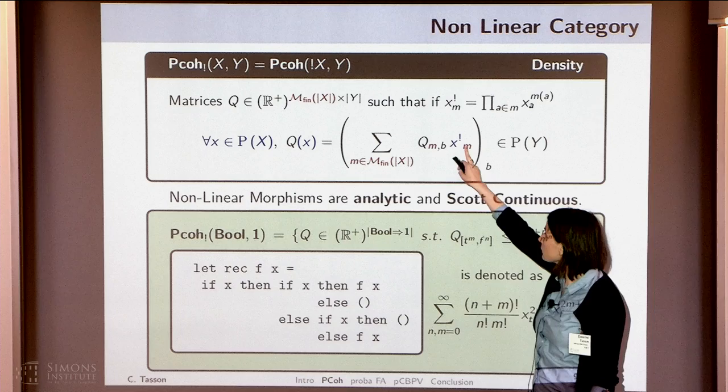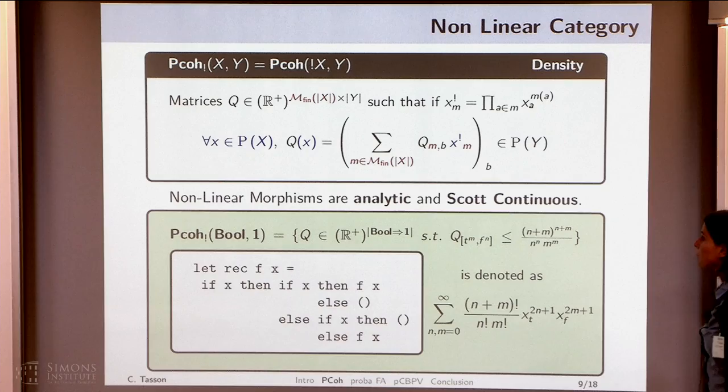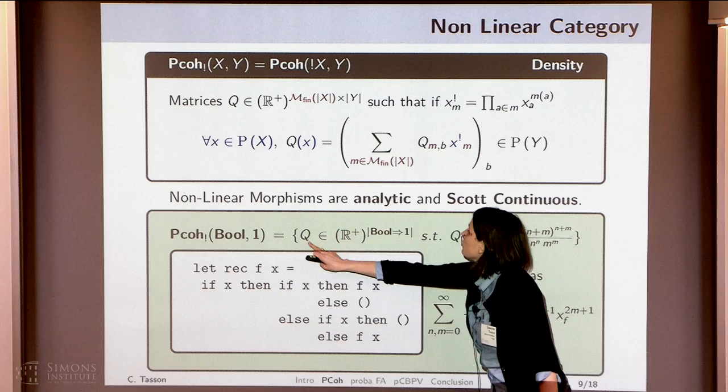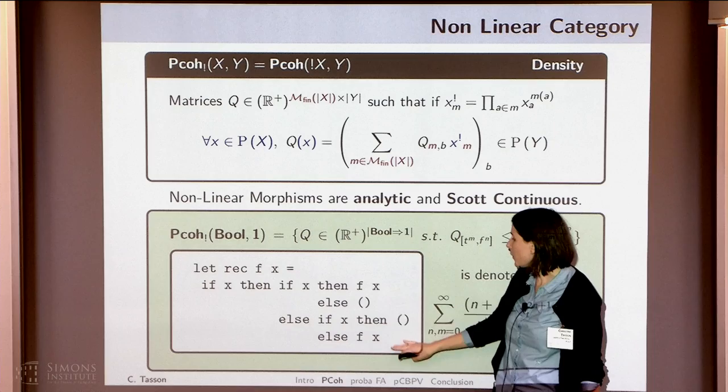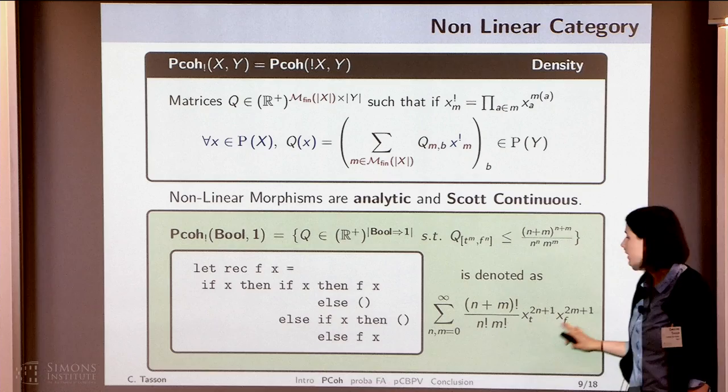So you can see that this can be seen as a monomial. My function here is an analytic function with infinitely many parameters. If we look at an example and compute this non-linear morphism, we get vectors such that the coefficient has to be as specified. And if we try to compute the semantics of a program, we get something which looks like a specific expression.